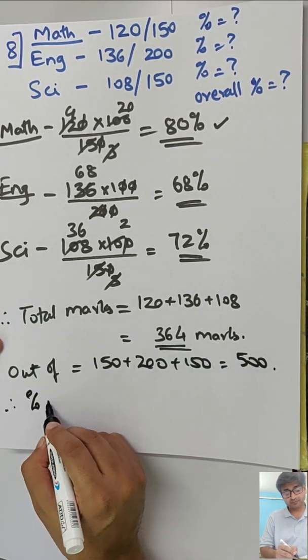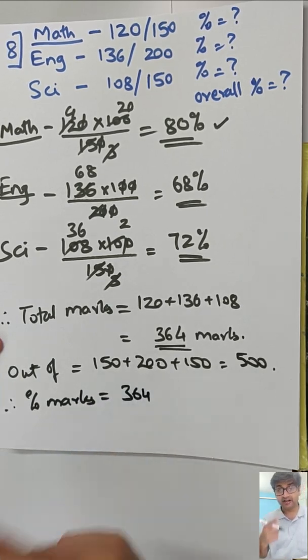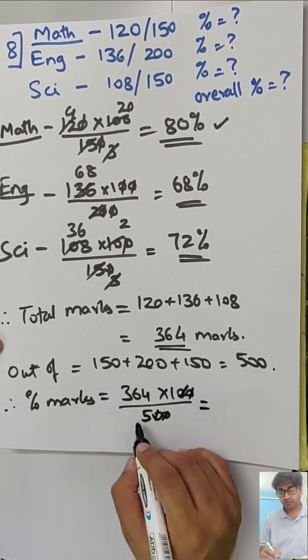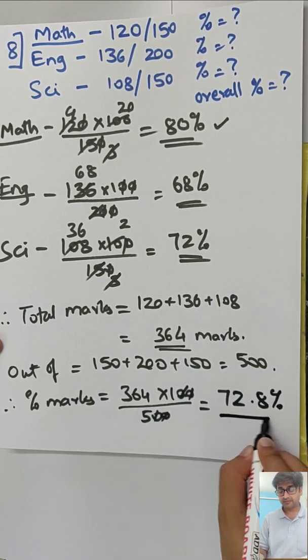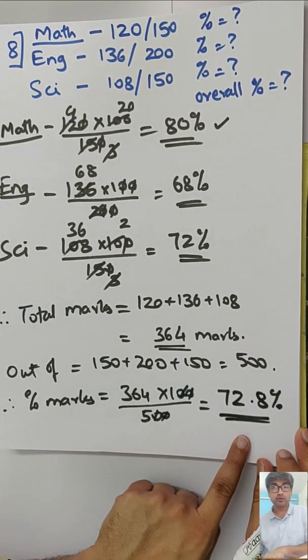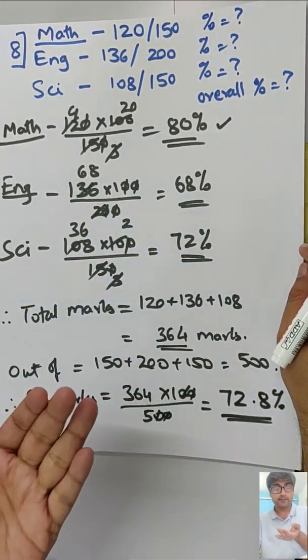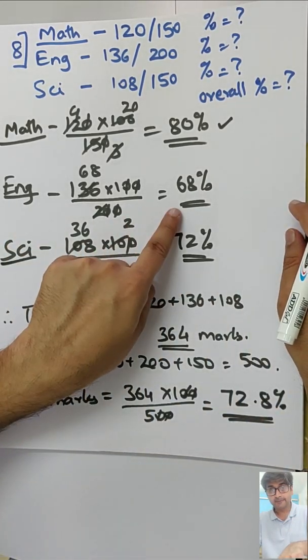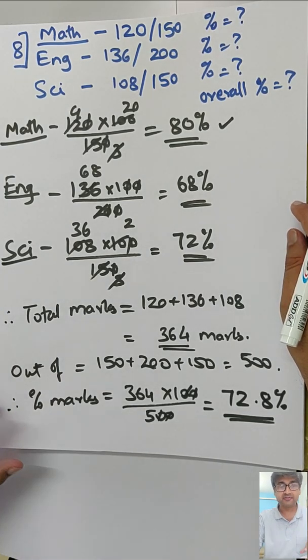Therefore percent marks is going to be 364, you are finding percent so into 100, out of 500. Two zeros go away, so 72.8%. So see, we were close, 72 to 74 we said. The child has scored 72.8% overall. English has brought the percent down, but maths has helped the percent to go up, whereas science is a stable one. So if your one subject also is bad, your marks are going to drop even if your maths is good. You should practice on every subject.